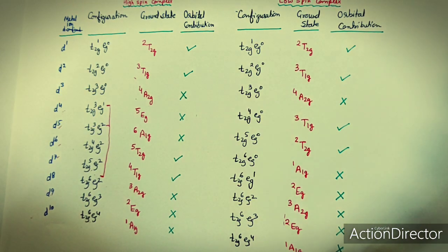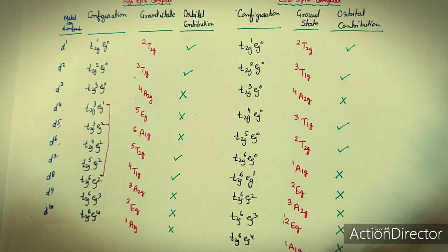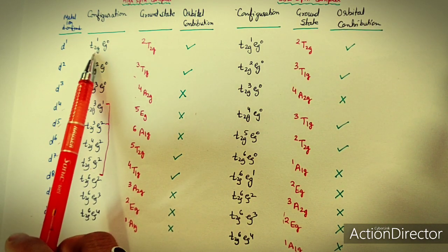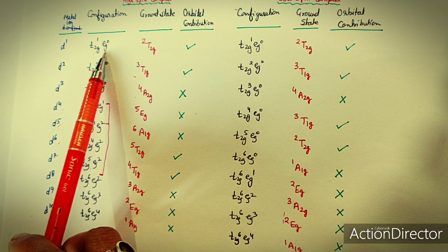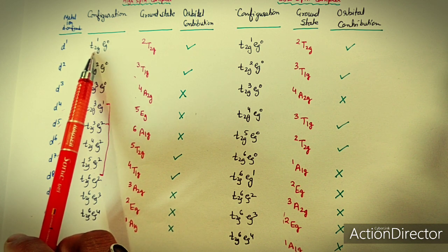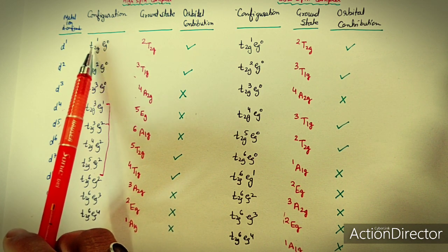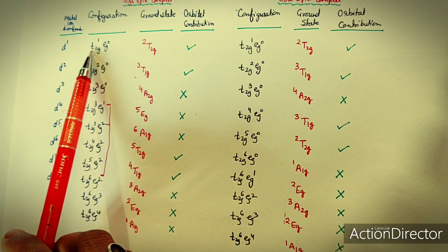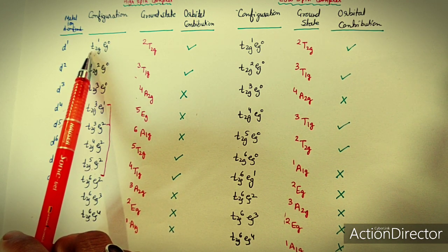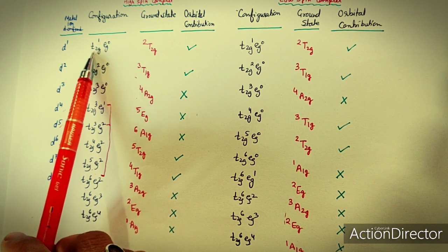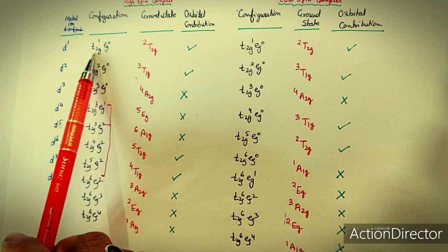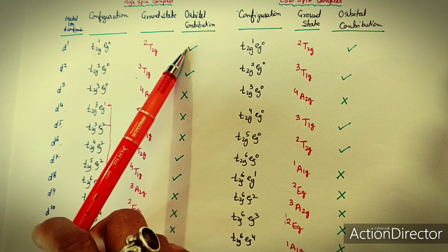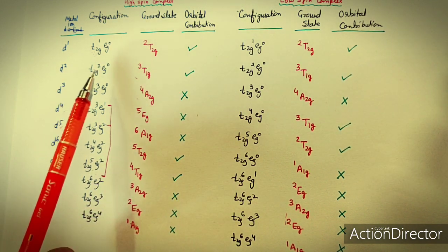Based on the configuration alone, we can decide the orbital contribution. For t2g1, the T2g is asymmetrically filled, so transformation can take place and there will be orbital contribution. For t2g2, it is again asymmetrically filled, so orbital contribution is present. For t2g3, it is symmetrically filled, so no orbital contribution — L equals zero. For t2g4 and t2g5, they are asymmetrically filled so orbital contribution is present.